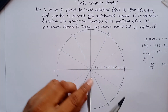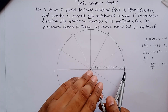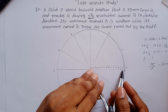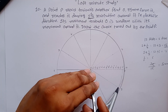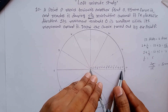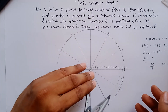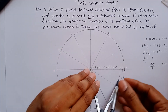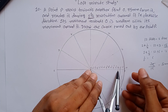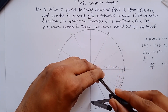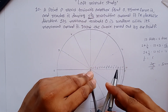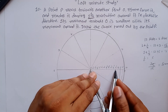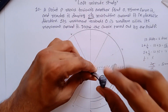Now using a compass, put the pointer on O. Starting from O, draw an arc from 1 dash up to point 1, then from 2 dash draw an arc up to point 2, from 3 dash up to point 3. Continue this process for each subsequent point.